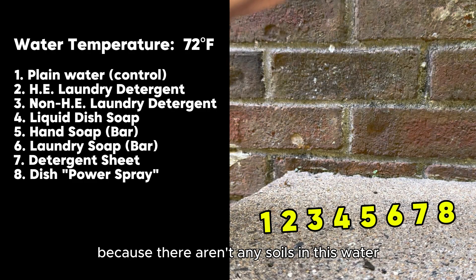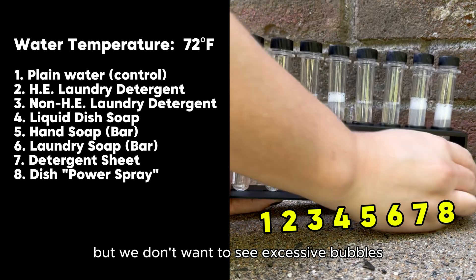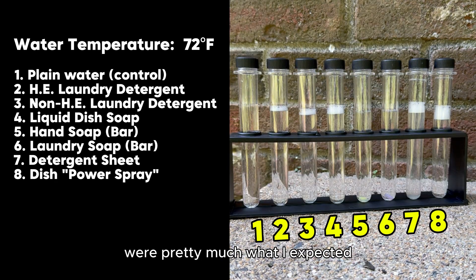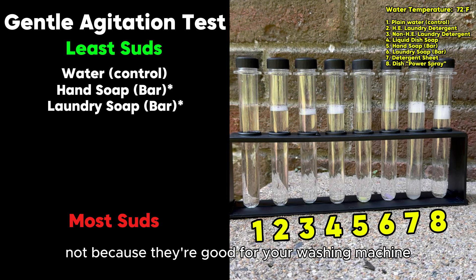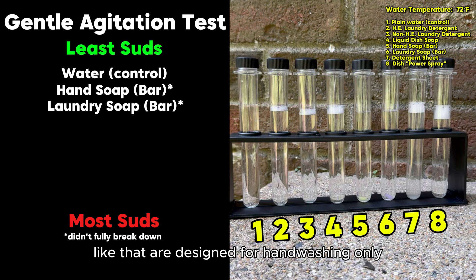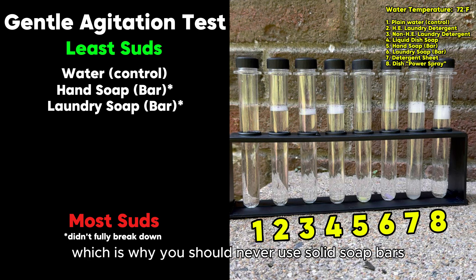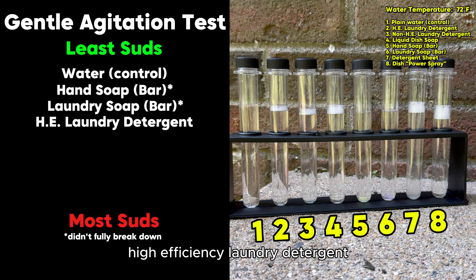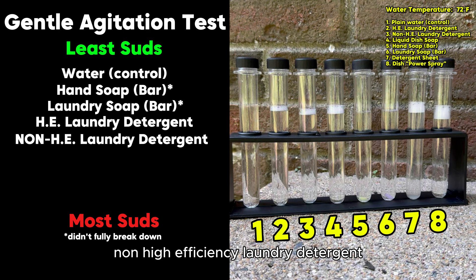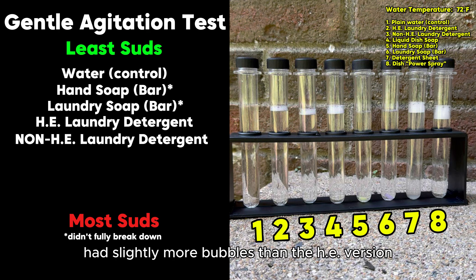We want to see some bubbles because there aren't any soils in this water, so bubbles are to be expected, but we don't want to see excessive bubbles. Going from least amount of suds to the most: the control tube of plain water made a few bubbles from being shaken, but they all popped pretty much instantly. The bar hand soap and laundry detergent bar made the least amount of bubbles — not because they're good for your washing machine, but because solid soap bars are designed for hand washing only and to break down in hot water. This water was too cold and didn't have enough agitation for them to properly break down, which is why you should never use solid soap bars in your washing machine, even if you grate them. High-efficiency laundry detergent had the next lowest amount of bubbles, which is exactly what we want — some bubbles, but not excessive. Non-high-efficiency laundry detergent, using the same brand as the HE detergent but without the HE logo on the bottle, had slightly more bubbles than the HE version.